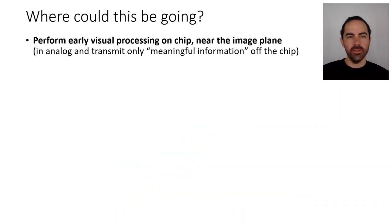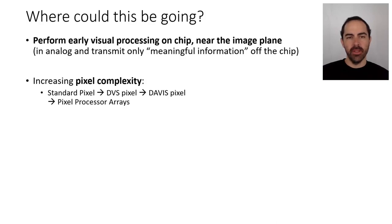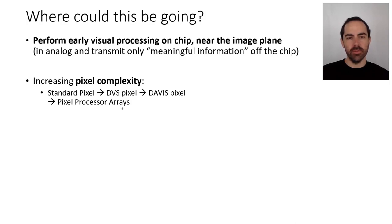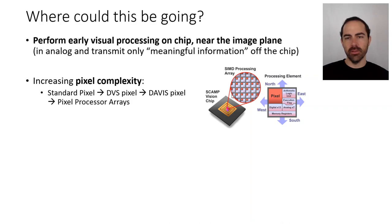This goes in the direction of performing low-level visual processing on-chip near the image plane in analog computing, transmitting only meaningful information. If one counts the number of transistors per pixel, there is an increase in pixel complexity: standard pixels have few transistors; DVS pixels need more for a differentiator and comparators; and DAVIS pixels require even a few more. Going further leads to pixel processor arrays or cellular processor arrays, where every pixel has a small processor.